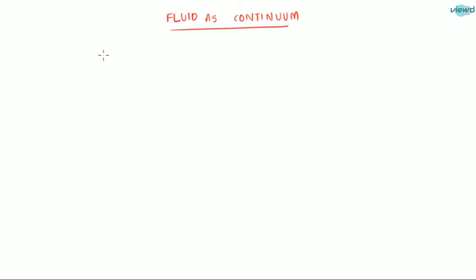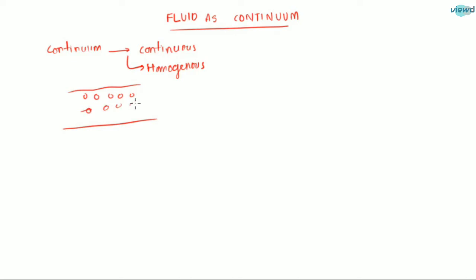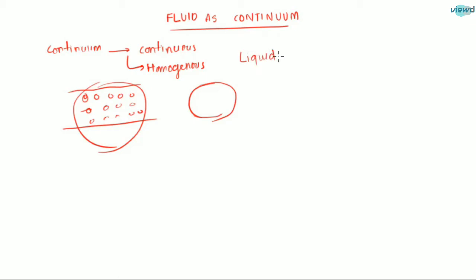In this video, let us see what is meant by continuum and why we consider the fluid as a continuum. First, let us understand what is continuum. Continuum means continuous and homogeneous, which means the fluid is composed of certain particles. We consider this total fluid as a single particle — we are considering this liquid in terms of a solid. This is the principle of continuum.